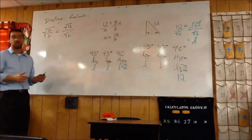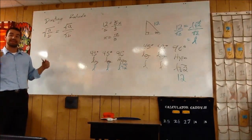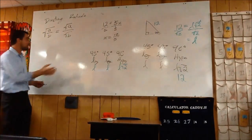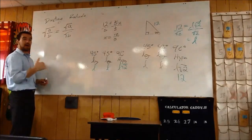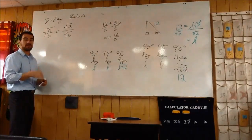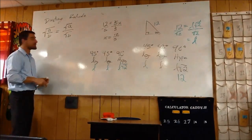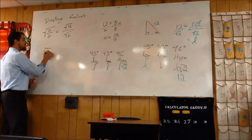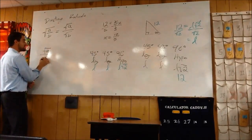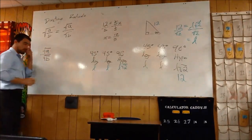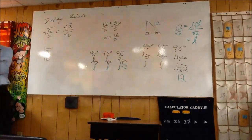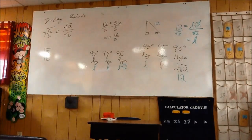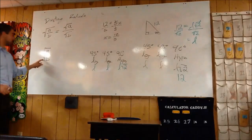There's one rule about radicals: you can't have a radical in the denominator of a fraction. So if you were to have something like the square root of a divided by the square root of b, whatever a and b are — you can't leave it like that.